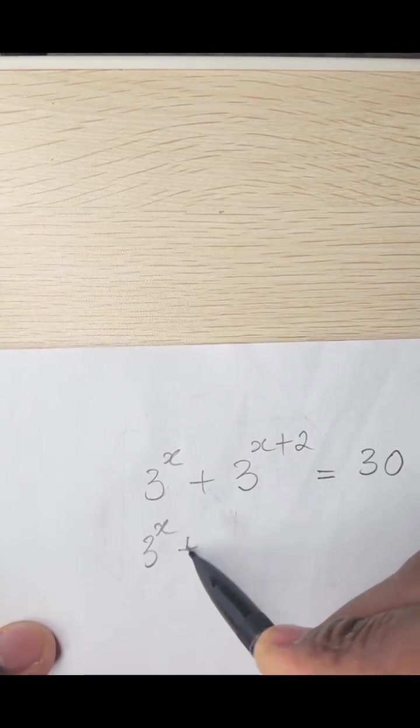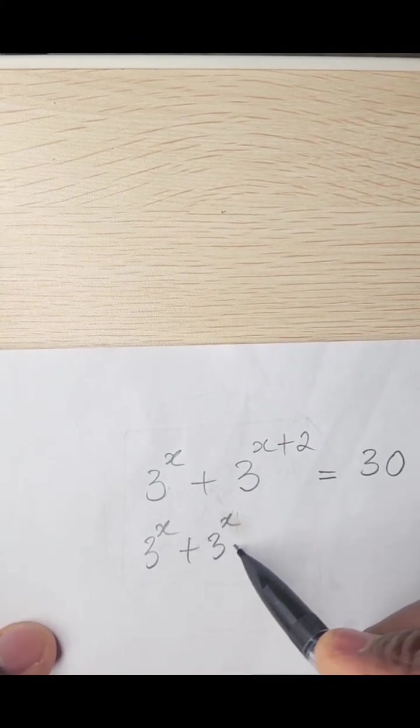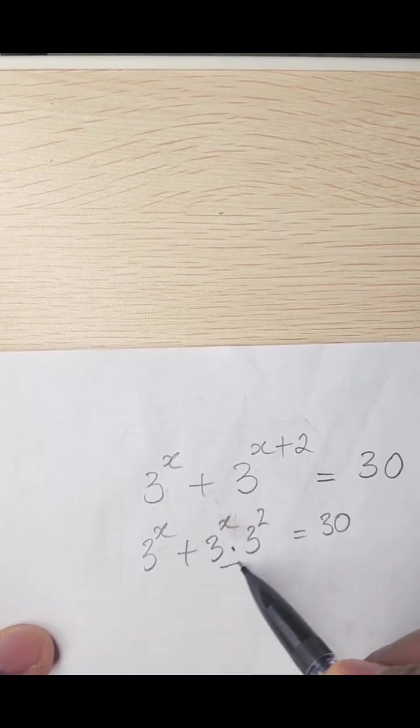So we have 3 raised to the power x plus, we can rewrite this to become 3 raised to the power x dot 3 raised to the power 2 equals 30. So how did we get this?